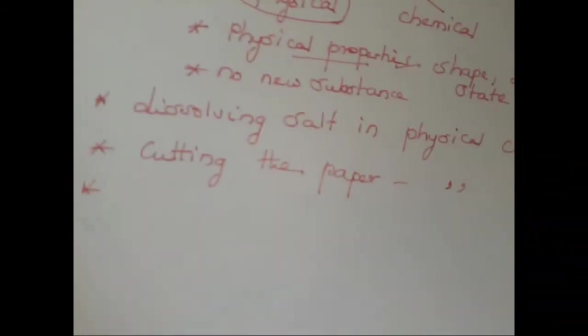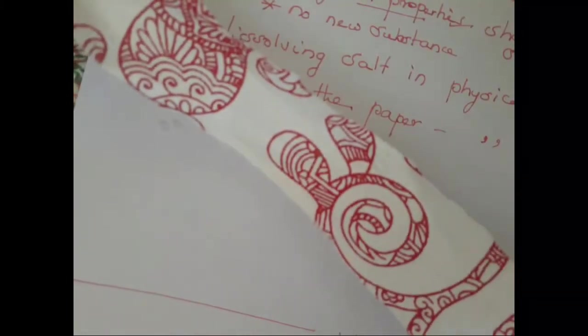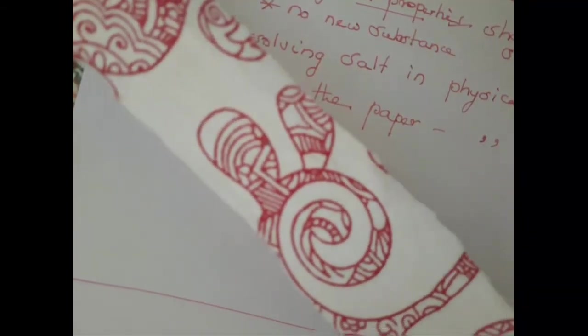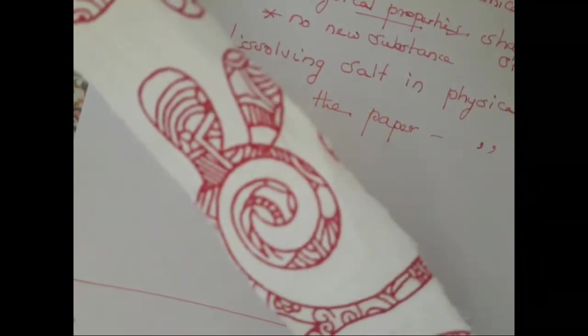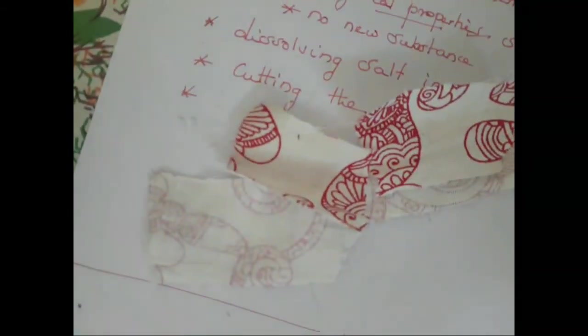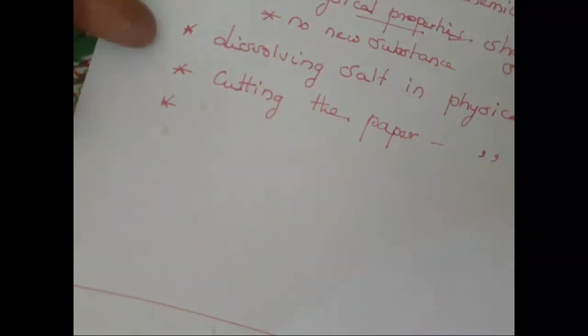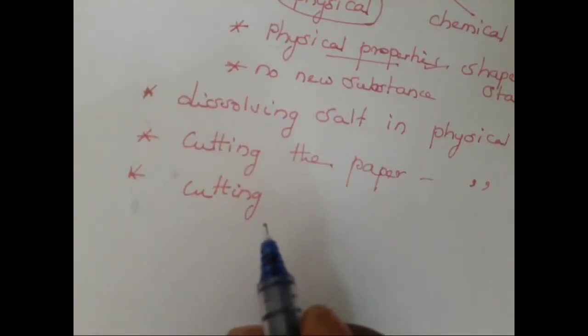Now let us see the third example. I am going to take a piece of cloth. Look here — I have taken a piece of cloth. If I ask you to say the physical property of this cloth, you will be able to say it is made up of cotton, it has a red texture, it is white in color at the back, and it is made up of thread. Now I am going to cut this cloth into pieces. Do you notice any new substance formed here? No, no new substance is formed. So cutting the piece of cloth is also a physical change. I hope you have understood physical change. Thank you, children.